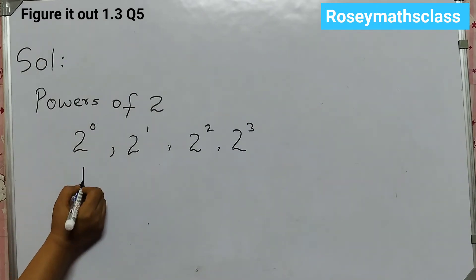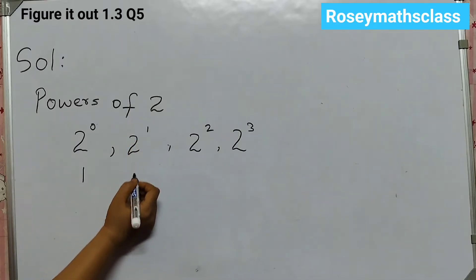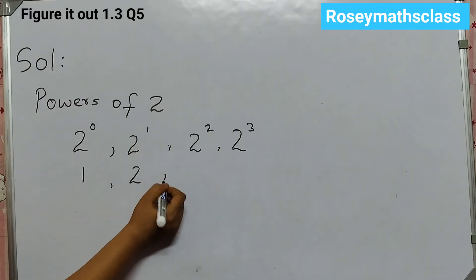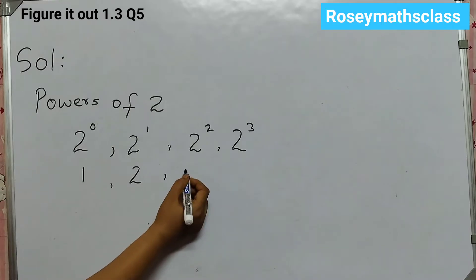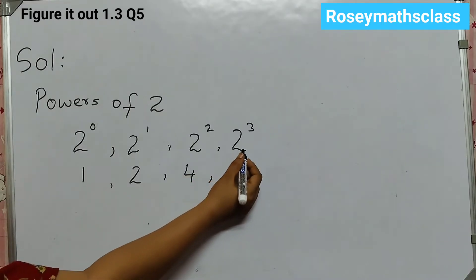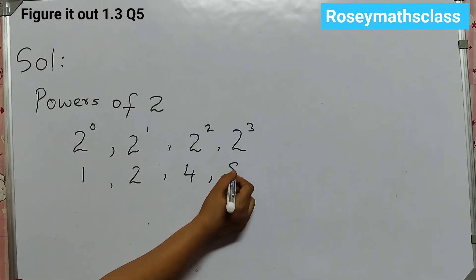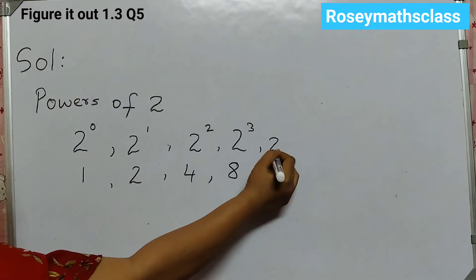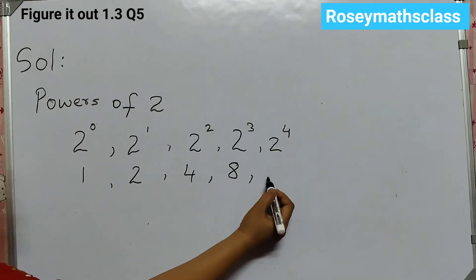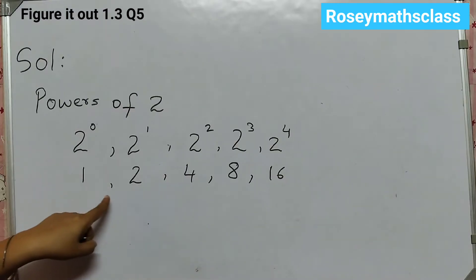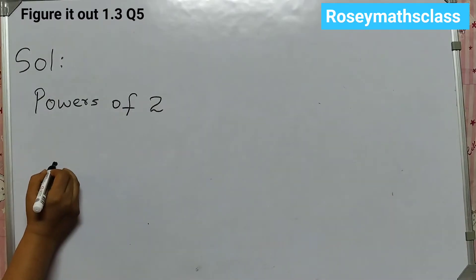The value of this is 1. 2 to the power of 1 is 2. 2 to the power of 2 is 2 into 2 is 4. 2 to the 4, 4 to the 8. 2 to the power of 4 will be 8 into 2 is 16. So this is the sequence for which we need to show the pictorial representation.